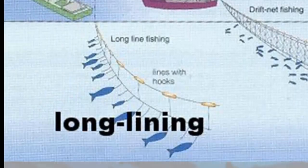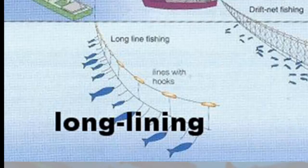Another strategy is long lining. Long lining uses long fish lines of up to 80 miles long that are hung with baited hooks. These are used to catch open ocean or bottom fish like swordfish, tuna, cod, sharks, and halibut. One of the big issues with long lining is sometimes the fishermen will discard the long lines — they'll just cut them — and they'll be left floating, and a lot of seabirds and things might actually get caught in these long lines, become wrapped up, and then drown.